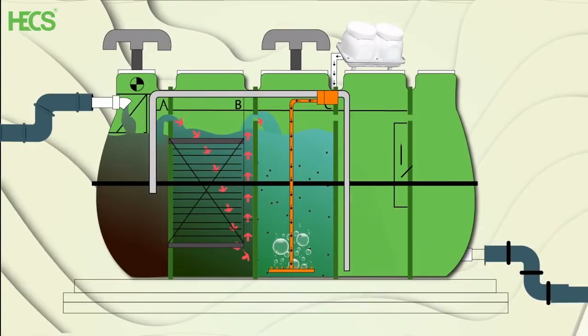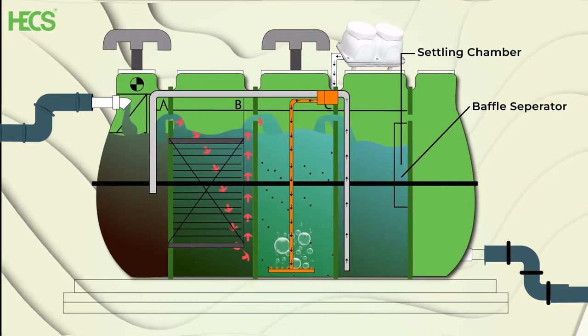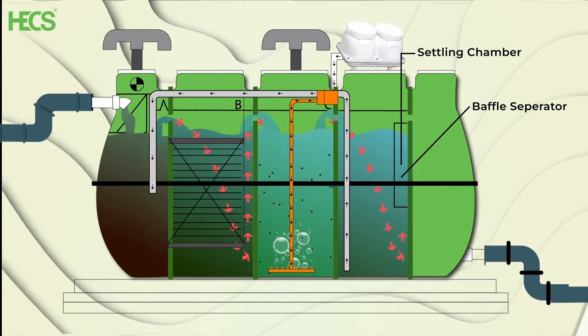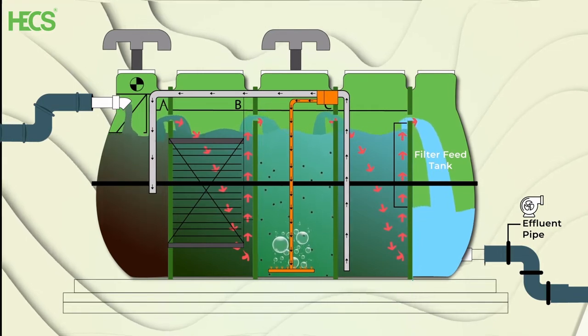The next chamber is a settling chamber. The activated sludge generated in the previous chamber settles down in this chamber and the same is recirculated into the first chamber through an internal recirculation line. The treated sewage then flows through a baffle separator into the filter feed tank, which is inbuilt in the STP system.